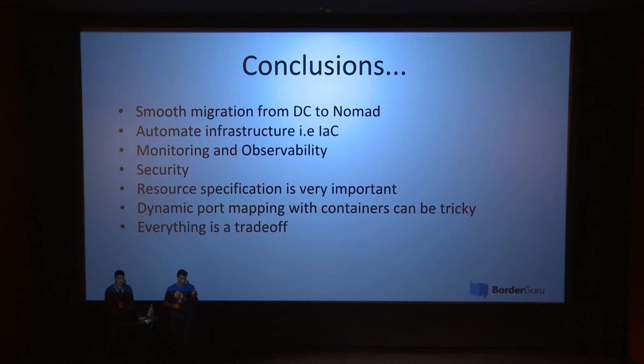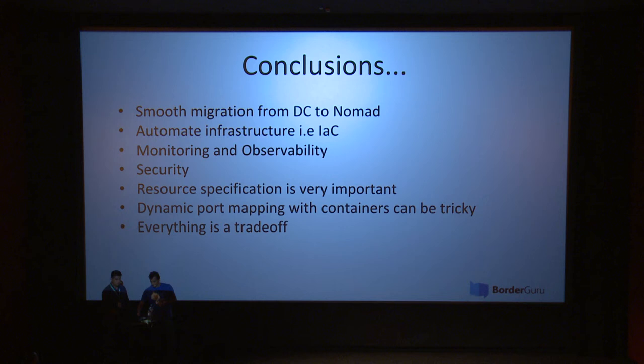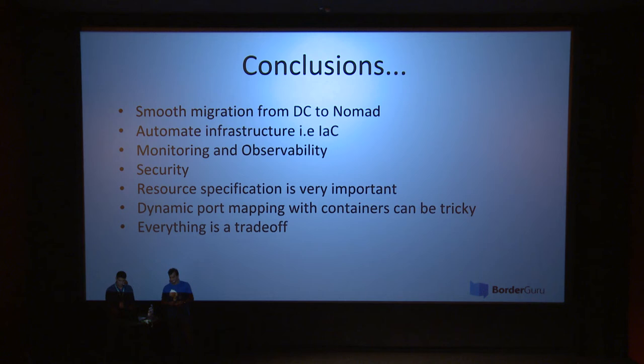So what did we learn in the last six months? First, Nomad really helped with the migration — it went smoother than we initially thought, all because of the simplicity. It also has a simpler learning curve and it's easier to build a mental model. If you're going to production, we recommend using infrastructure as code.